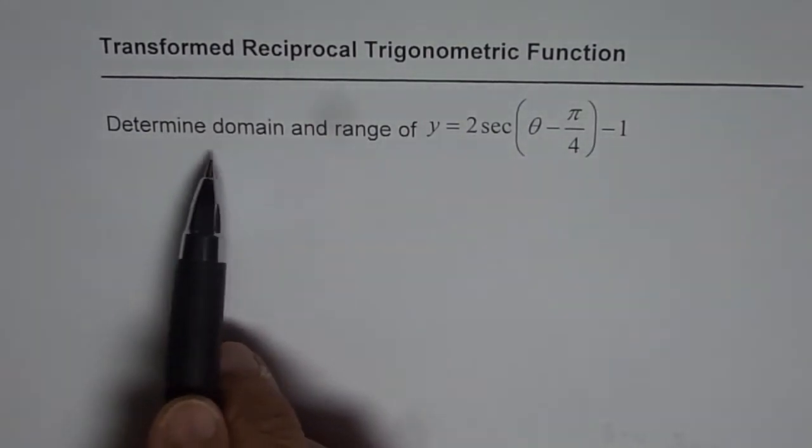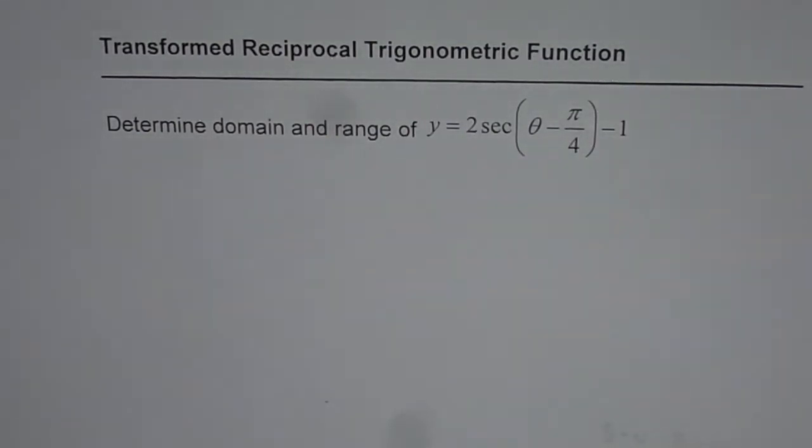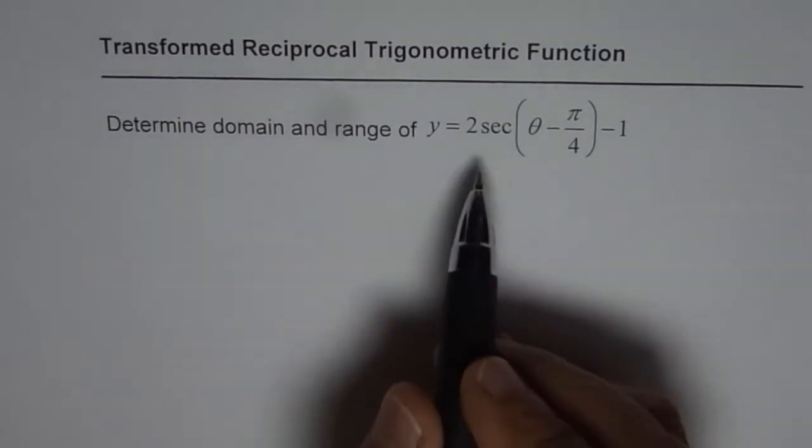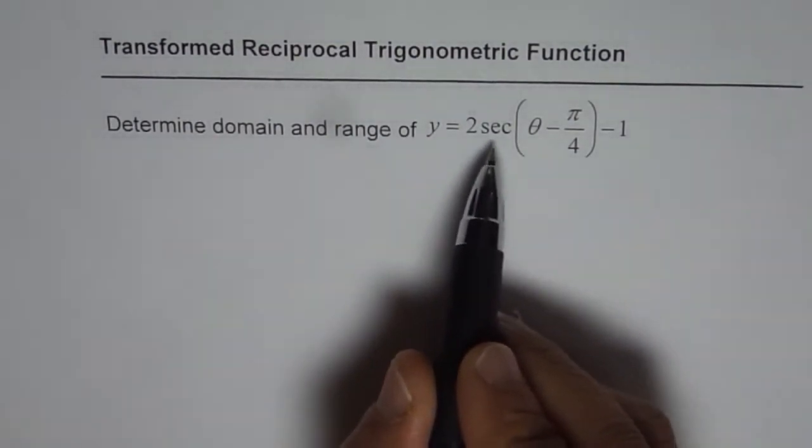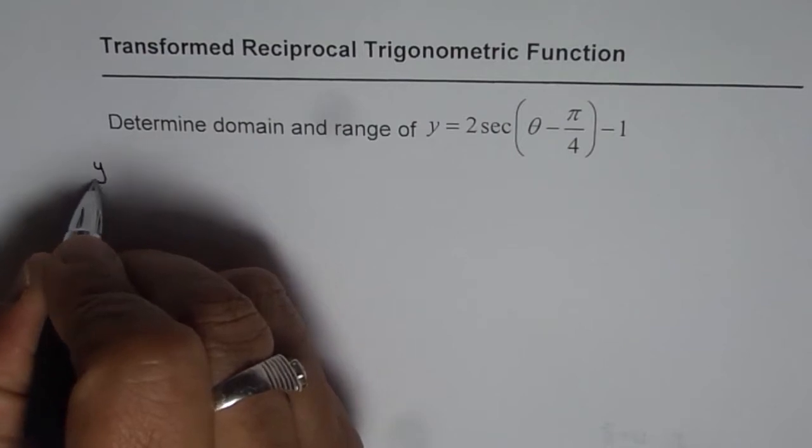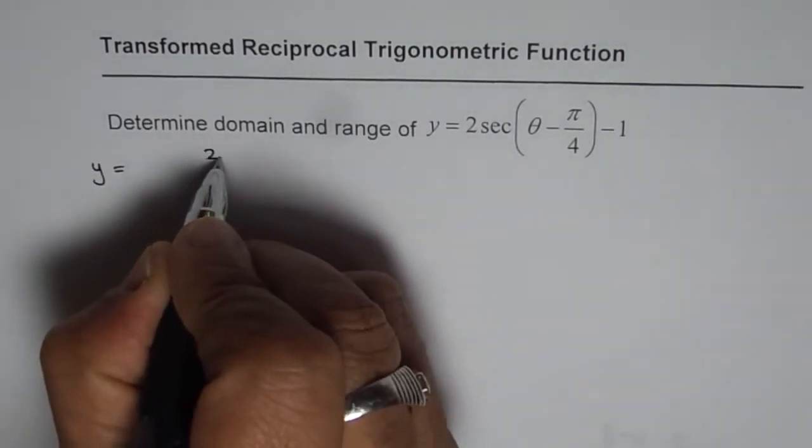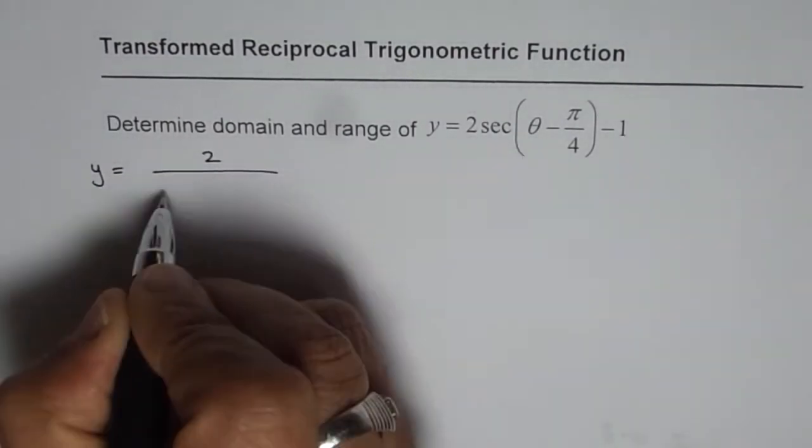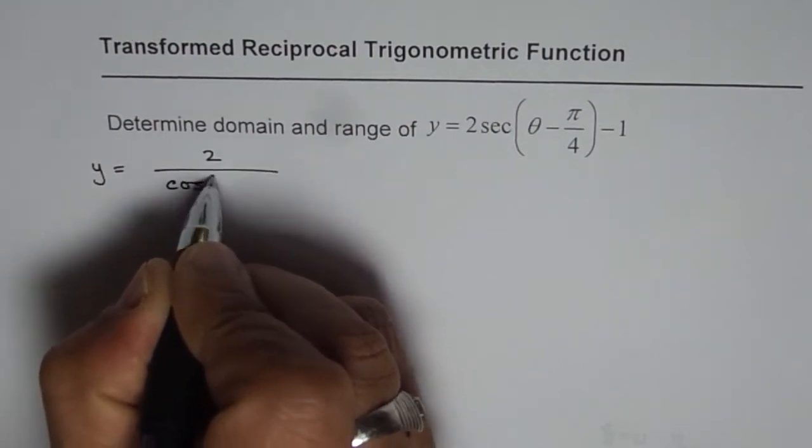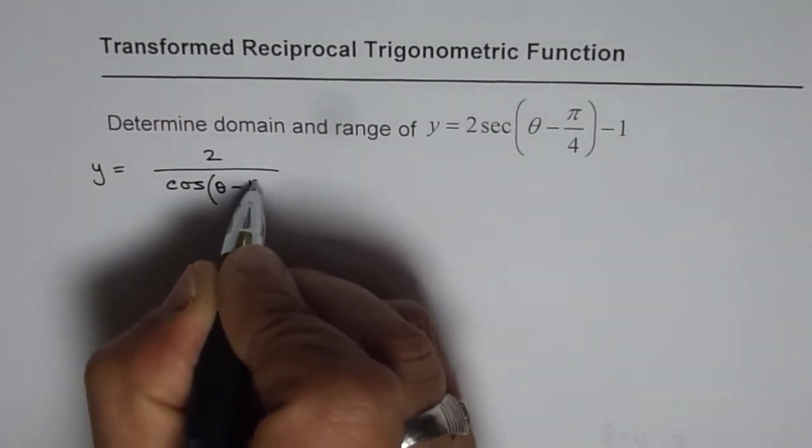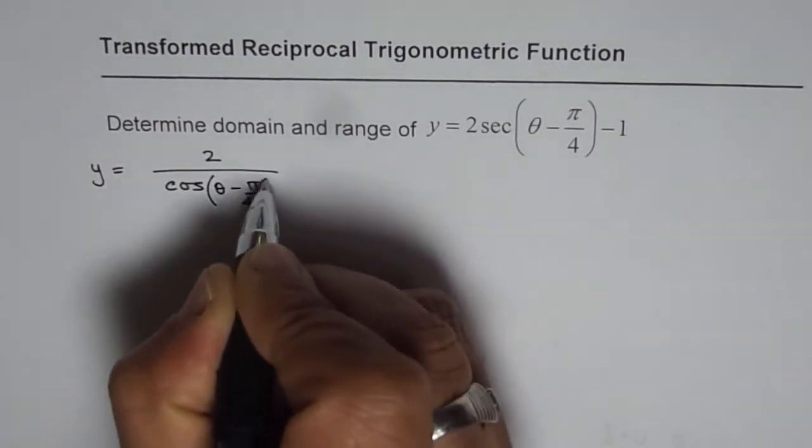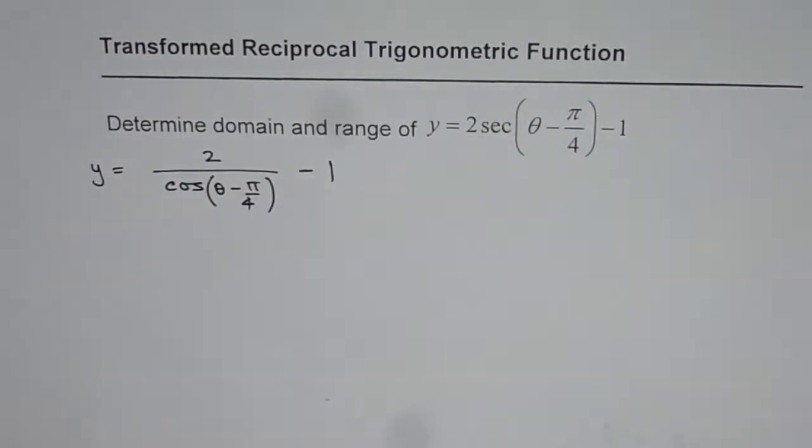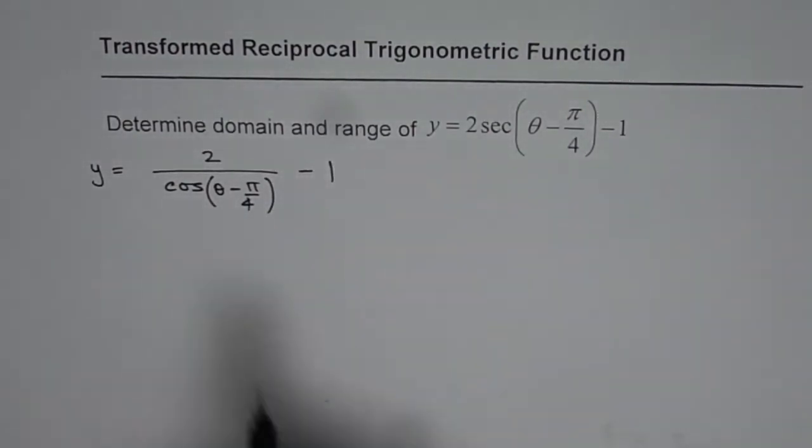We need to determine domain and range of this function. As you know, secant is reciprocal of cosine, so let me write this function as y equals 2 over cos(theta minus pi by 4) minus 1. So basically we have a cosine function in the denominator.